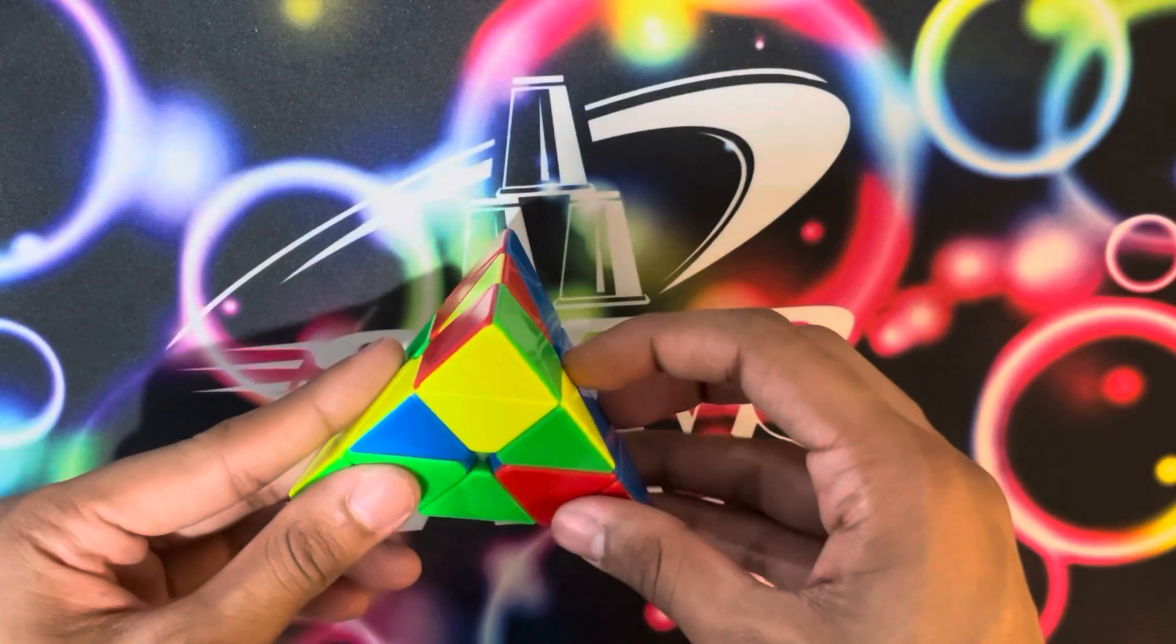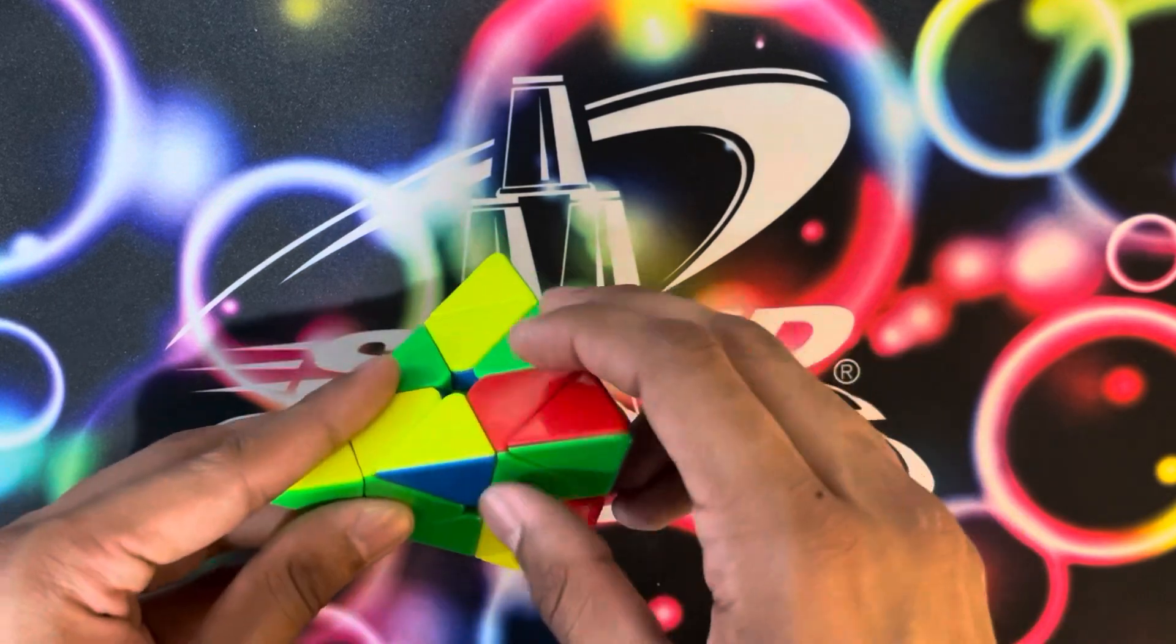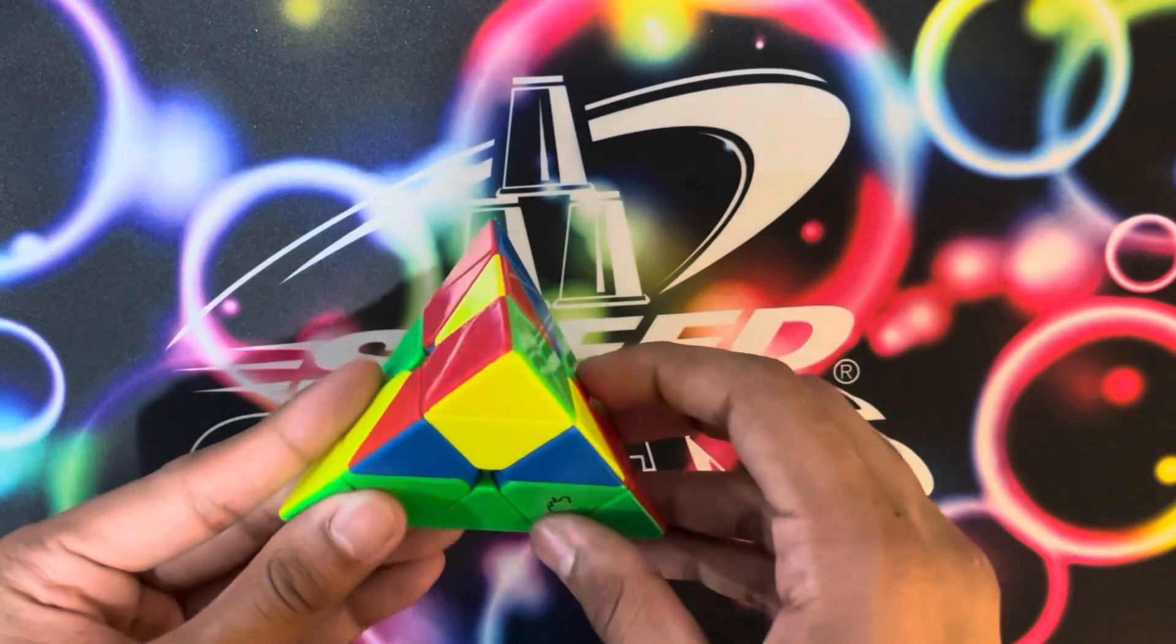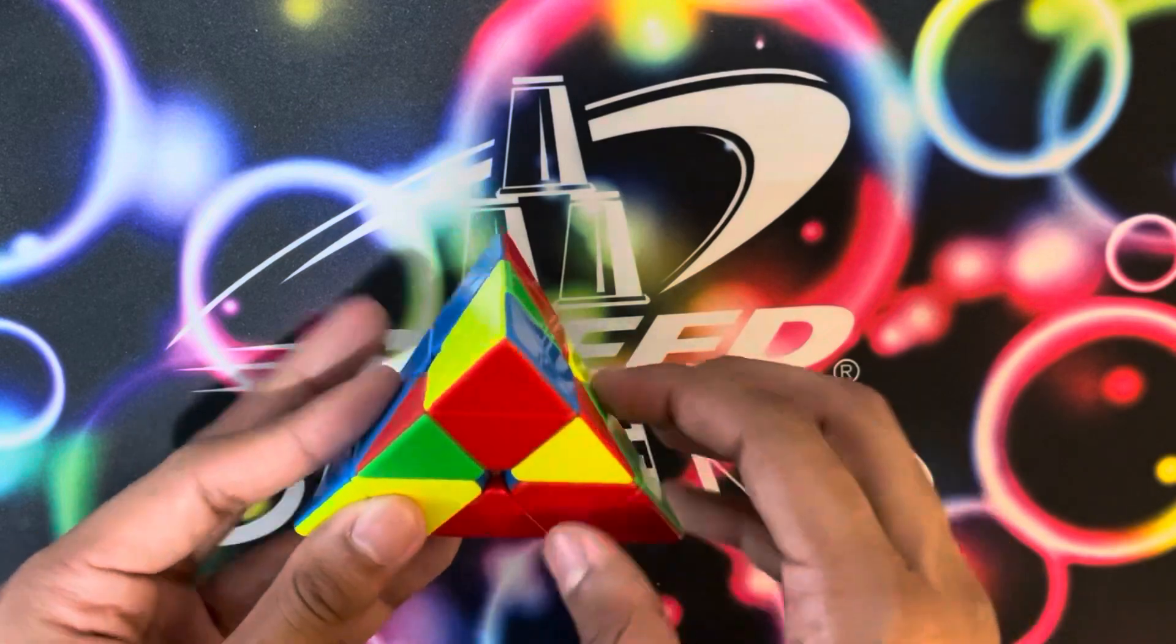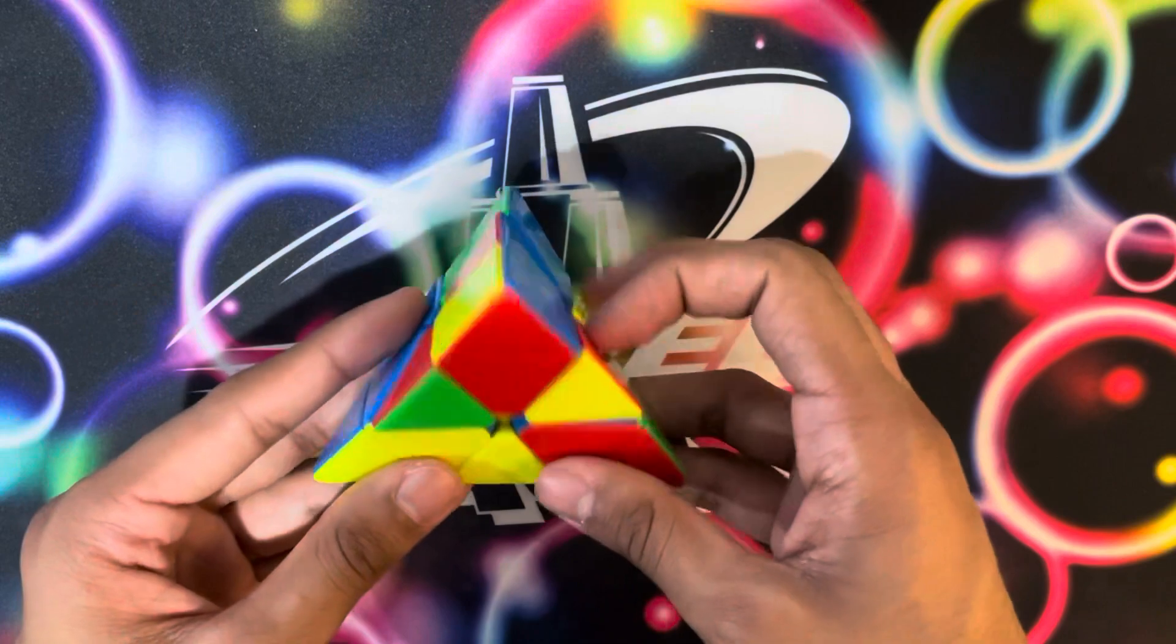On this scramble, Chris does green. He starts off by solving this center so that you can create a bar like that, then he rotates, inserts this green red edge, and gets a nice L4E case.